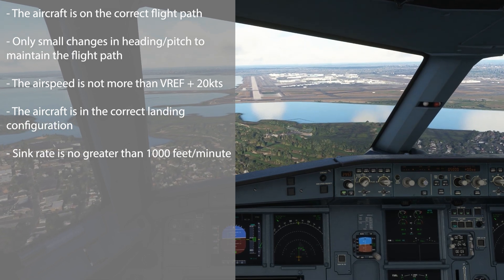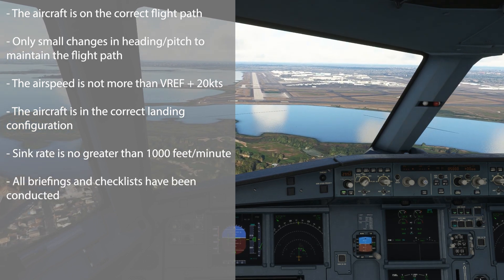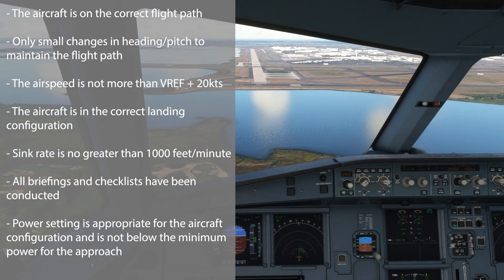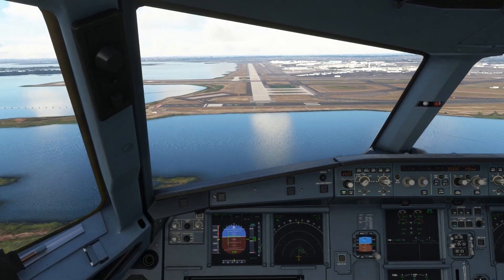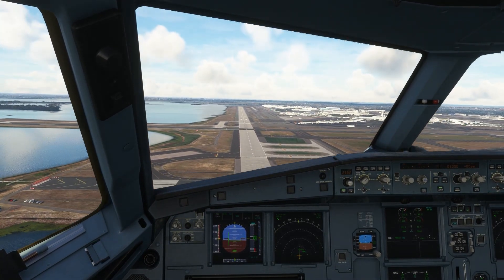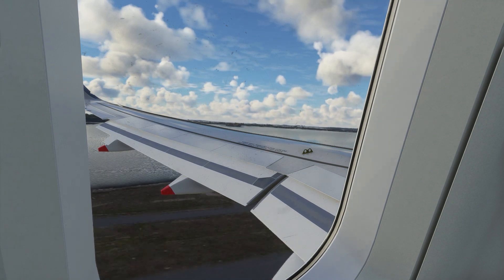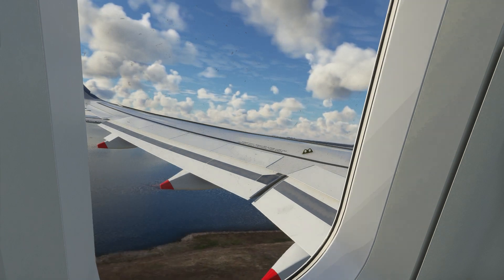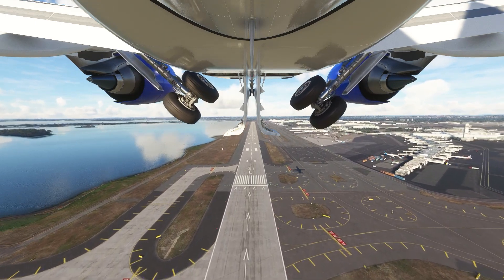The aircraft must also be in its correct landing configuration and not have a sink rate of more than 1,000 feet per minute, unless the approach requires a higher sink rate. All briefings and checklists must be completed, and the power setting must be appropriate and not below the minimum. If these criteria aren't met, the pilots will set go-around thrust, configure the aircraft for takeoff — gear up, flaps set — and speak to air traffic control to get fed in for another approach.